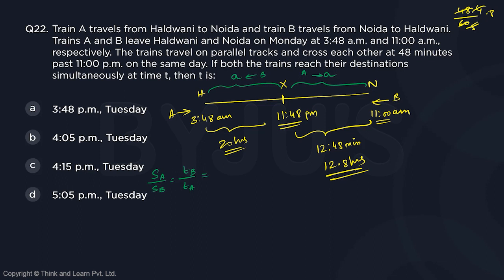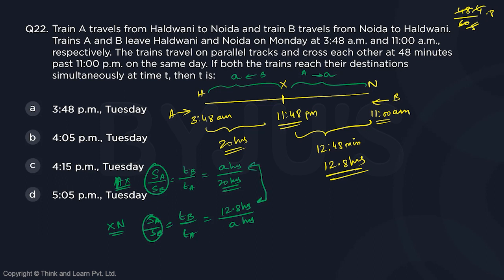For the H-to-X journey: time taken by B to travel from X to H is A hours, and time taken by A is 20 hours. For the X-to-N journey: time taken by B is 12.8 hours and time taken by A is A hours. Since the speed ratio doesn't change, A/20 = 12.8/A, giving A² = 12.8 × 20 = 256, so A = √256 = 16 hours.